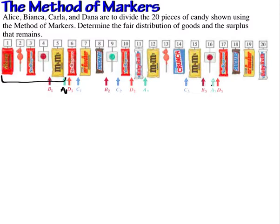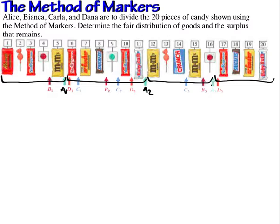The next fair share for player A — A2 — includes items 6 to 11. The third fair share includes items 12 to 16, and the fourth fair share includes items 17 to 20. These are all from the point of view of player A, looking only at player A's markers.